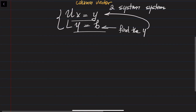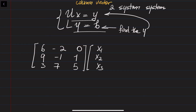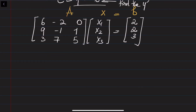In the previous examples we discussed the LU decomposition of this kind of matrix. A is given as the 3×3 matrix: row 1 is [6, -2, 0], row 2 is [9, -1, 1], row 3 is [3, 7, 5]. This is multiplied by vector x with components x1, x2, x3, which we need to find. This equals B with components [2, 2, 3].